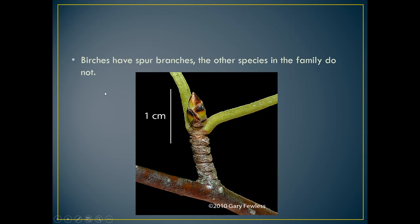One important thing that the Betula genus — the birches — have that the other species in this family don't are spur branches. You can see here alongside these are all leaf scars where leaves would be, and there are bundle scars within the leaf scars. These spur branches are present on birches but not on alders, ironwoods, or musclewoods.